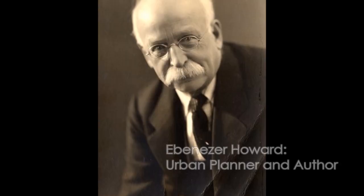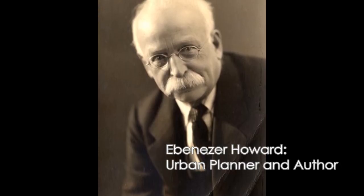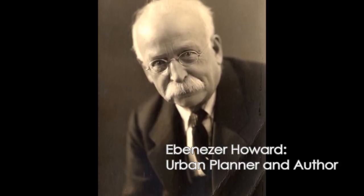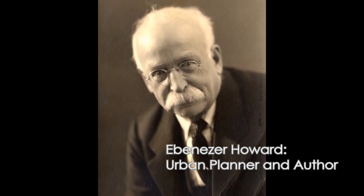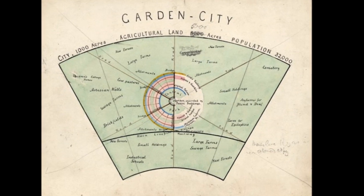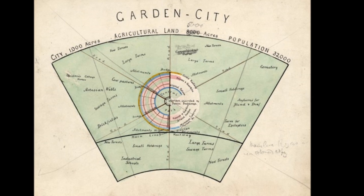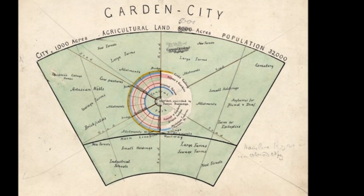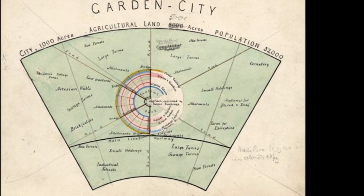Our perceived notion of utopia had to start somewhere, so let's look back at a few people who made an impact on how we imagine utopian societies today. First up, we've got Ebenezer Howard. In 1898, Ebenezer Howard had a vision for a utopian city where people lived harmoniously together with nature. He called his utopian vision Garden City.